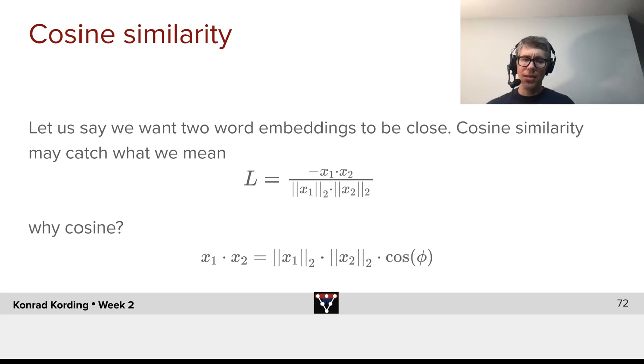Well, the scalar product of x1 and x2 is the norm of x1 times the norm of x2 times the cosine of the angle between them.